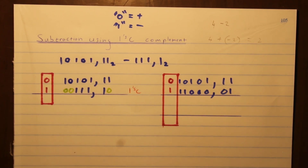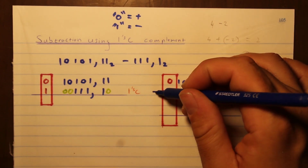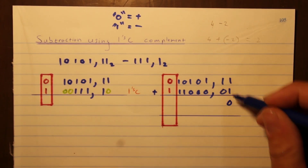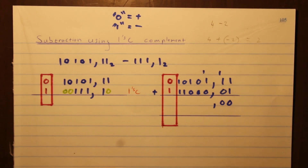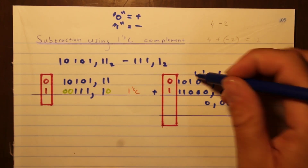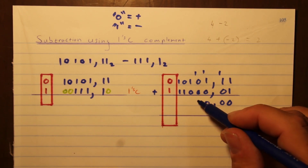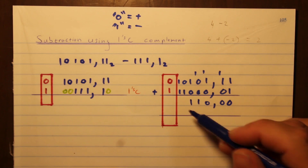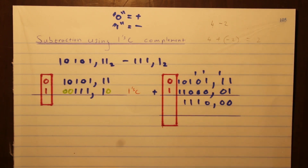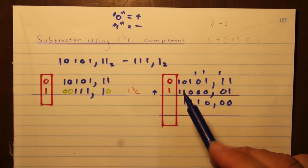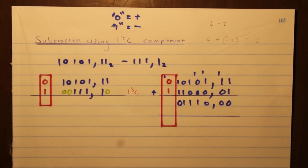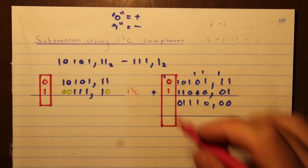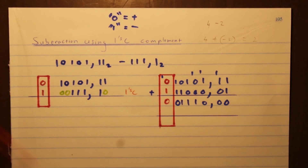Now I'm going to perform binary addition. One plus one is zero carry one; one plus one plus zero is zero carry one; one plus one is zero carry one; one plus zero plus zero is one; zero plus one is one. Then one plus one is zero with a carry into the sign bit column, and one plus one in the sign bit column is zero — which is what we expect, because the answer has to be positive.